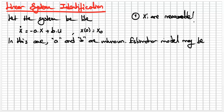This is a pre-assumption: you can define any model, but we set x̂_dot equal to -Â x̂ + B̂u. You can derive estimator models in many ways, but I choose this model, which is called the estimation model.